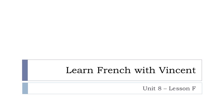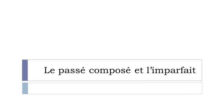Bonjour à tous and welcome to Learn French with Vincent. This is unité 8, leçon F. In this lesson we'll work together on le passé composé et l'imparfait. I introduced the imparfait in the previous lesson and we saw the passé composé a long time ago. It's usually quite tricky to know exactly when to use le passé composé and l'imparfait, so that's the reason why I thought it might be useful to spend a few minutes on that.